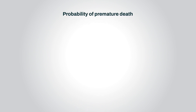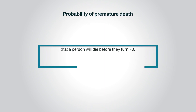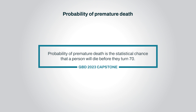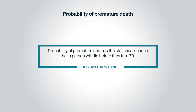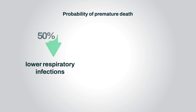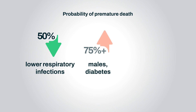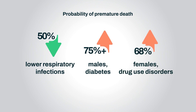Probability of premature death is the statistical chance that a person will die before they turn 70. The GBD estimates significant decreases in lower respiratory infections — a nearly 50% drop in probability of premature death. But we are moving backwards in other areas. The risk of a man dying before 70 from diabetes increased over 75%. And for women, the risk of premature death from drug use disorders is up by 68%.